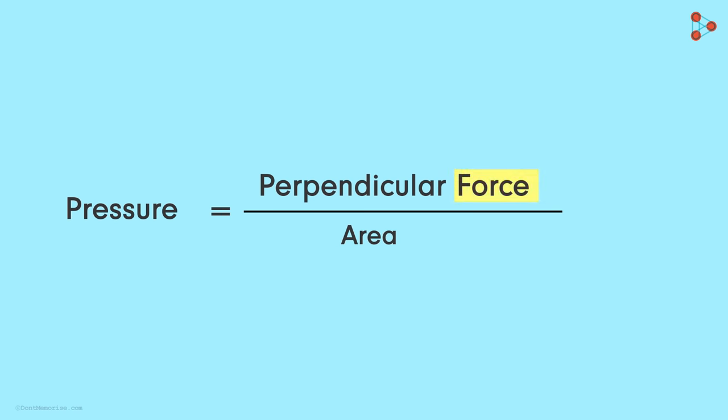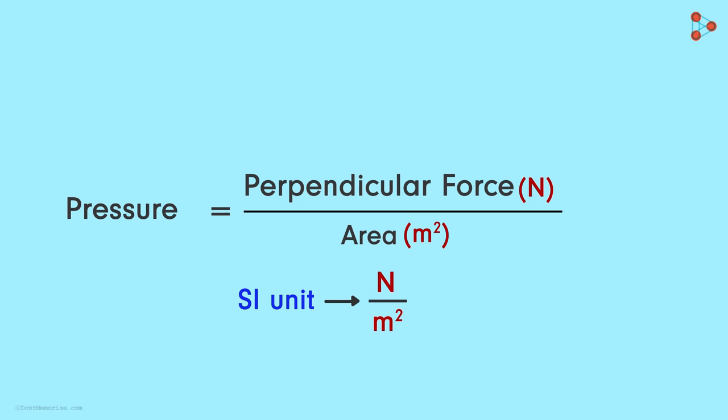It's easy! Force acting per unit area. We already know that the SI unit of force is Newton denoted by N and that of the area is meter squared. So the SI unit of pressure is Newton per meter squared.